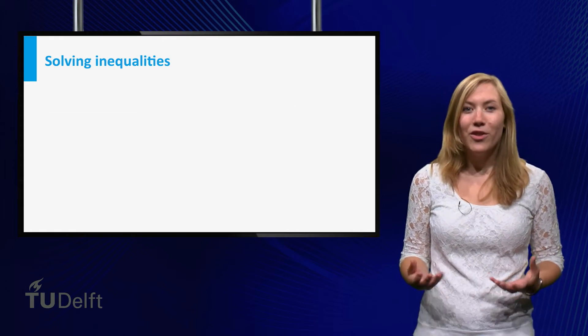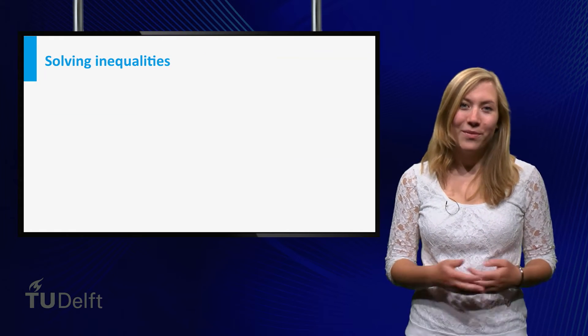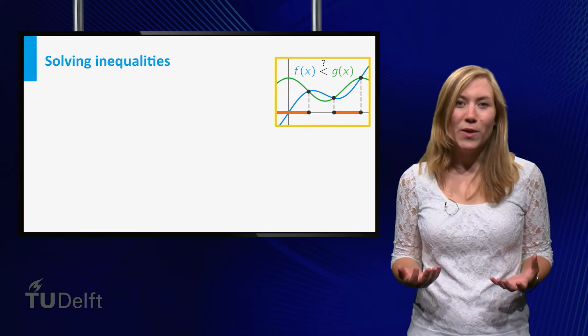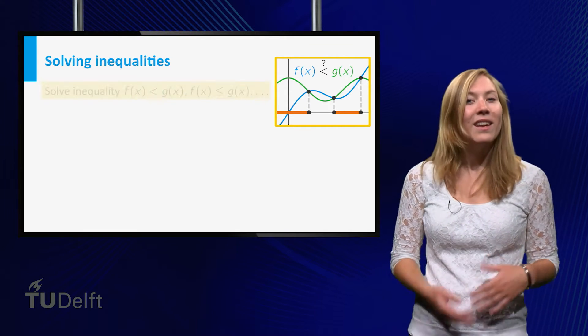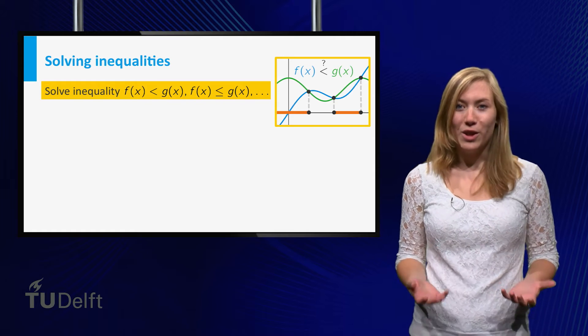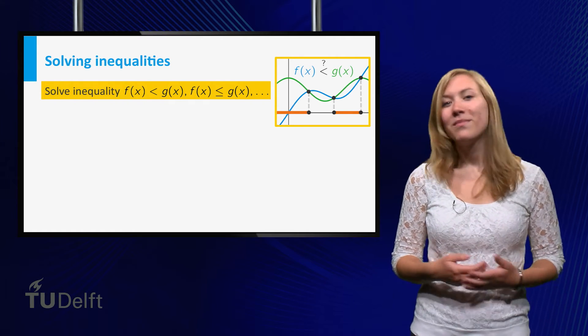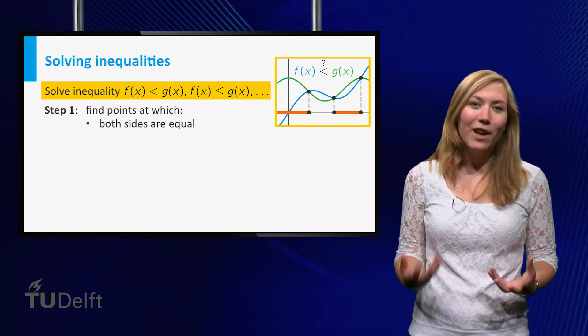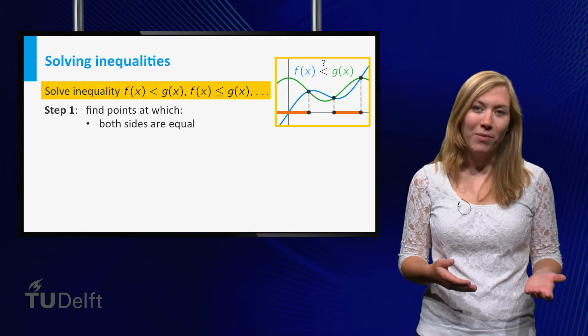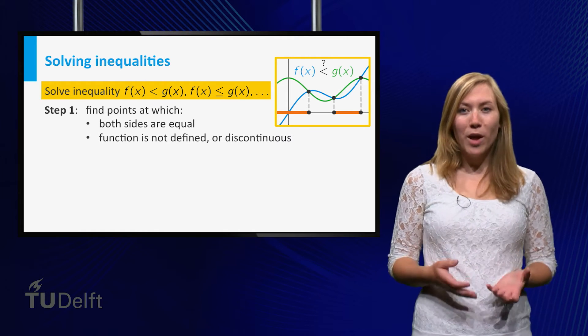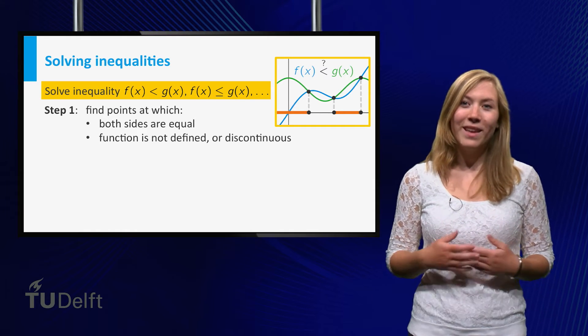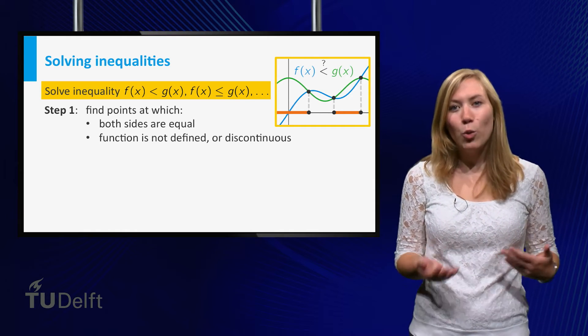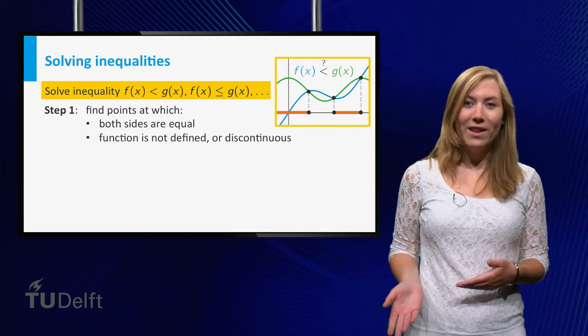The next topic was solving inequalities. We want to find out for which values of x the graph of f is below the graph of g. The general method to solve such inequalities is the following: First, find the x values where the functions are equal and the points where one of the functions is not defined or has a discontinuity. At such points, the inequality can change from valid to invalid.